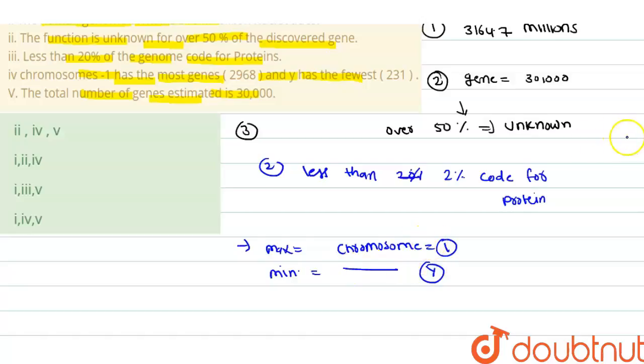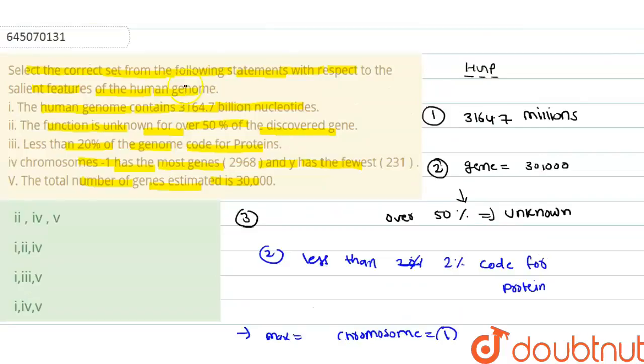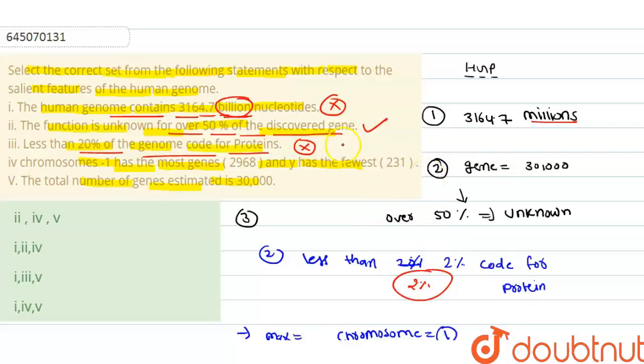So if we talk about option first, it is saying that human genome contains 3164.7 billion nucleotides. That is incorrect because it's million, not billion. Second one—unknown for 50 percent of discovered genes—that is right. Less than 20 percent of genome code for protein, that is incorrect because only 2 percent or less than 2 percent code for protein. Chromosome 1 has most genes and Y has fewest genes, that is also right. And total number of genes estimated 30,000, that is also right. So option first and option 3 are wrong, all others are right.